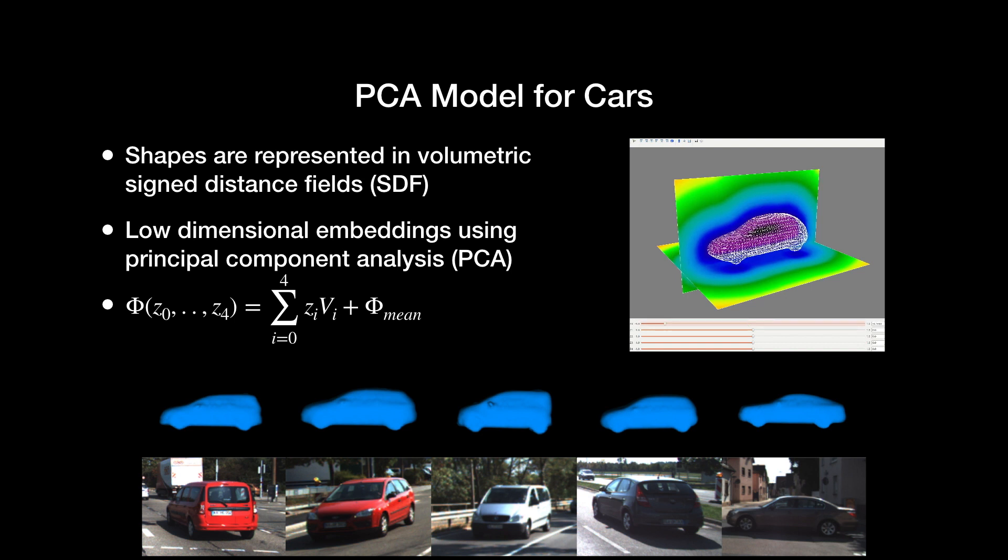To describe the 3D shape of a car using a few parameters, we use the PCA embeddings of car shapes. More specifically, the shape of each car can be represented by a 3D signed distance function. By discretization, it is converted into a voxel grid which can be linearized as a 1D vector. Stacking the shape vectors for many cars, PCA is performed and the shape of any car can be computed as a linear combination of the principal components plus the mean shape.